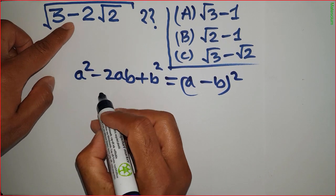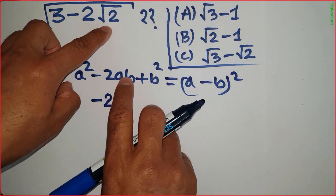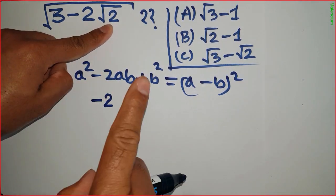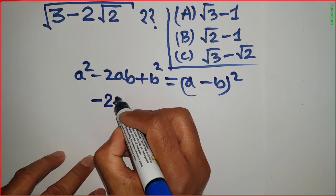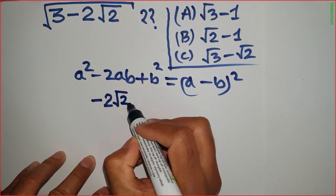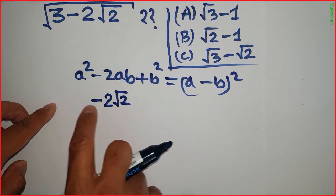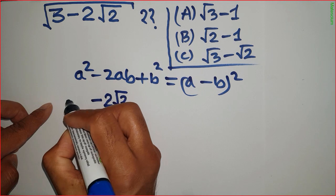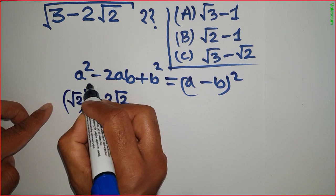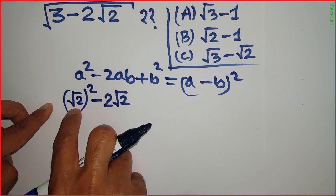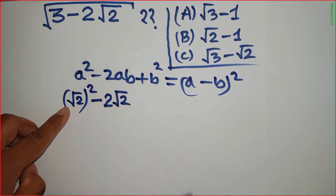So I can write this minus and this 2 from the formula here. Look — this is square root of 2. I can write 'a' as square root of 2, meaning a equals square root of 2. Since a is square root of 2, a squared equals 2.